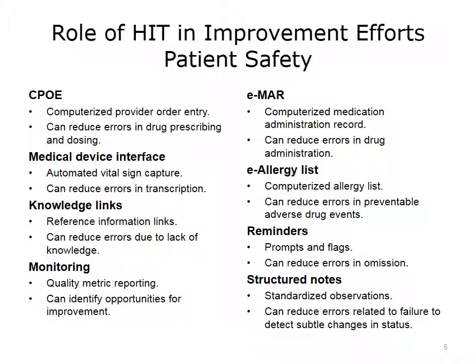Medical device interfaces allow for automated capture of vital signs such as heart rate and blood pressure, reducing the possibility of human error by eliminating the transcription step. The electronic medication administration record can reduce errors in drug administration by displaying a record of drugs already administered and those scheduled. An electronic allergy list can reduce errors by preventing adverse drug events. Knowledge links reduce errors by providing reference materials when there is a lack of knowledge on the part of the prescriber or patient. Quality metric reporting can identify opportunities for improvement. Reminder prompts and flags can reduce errors in omission. Structured notes use standardized observations that can reduce errors related to failure to detect subtle changes in status.